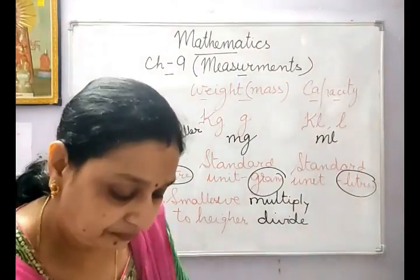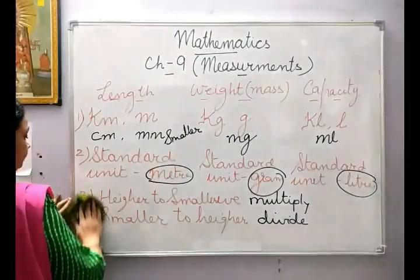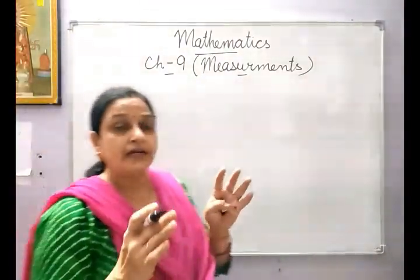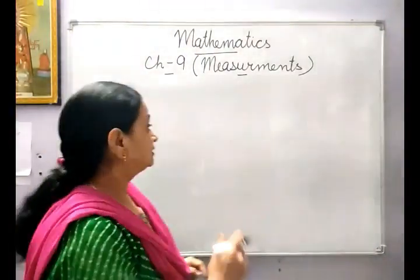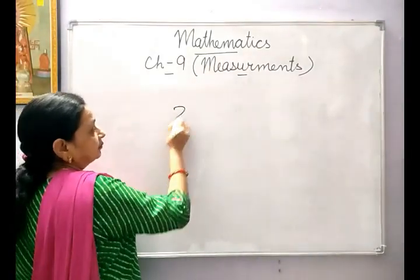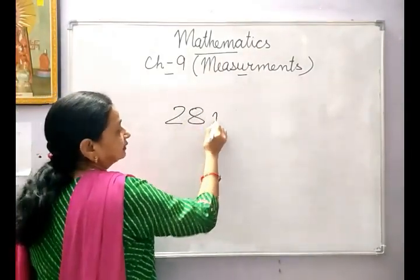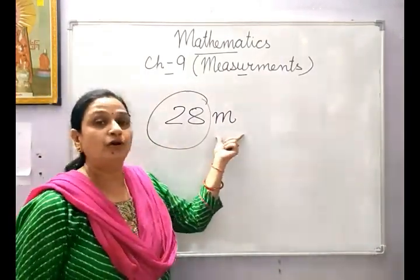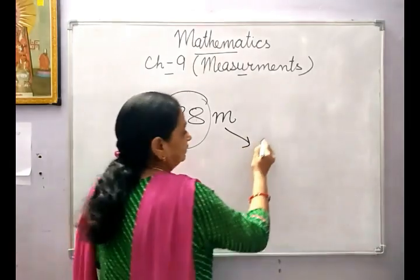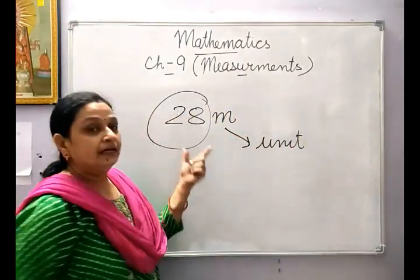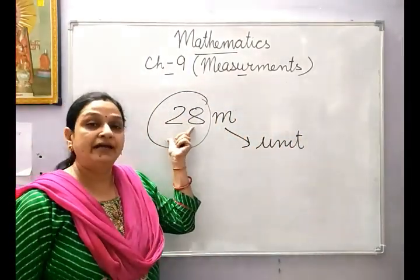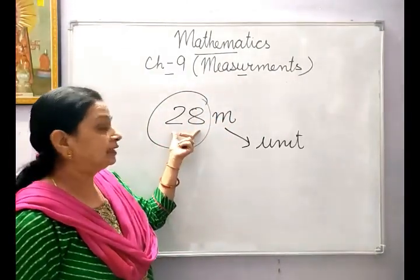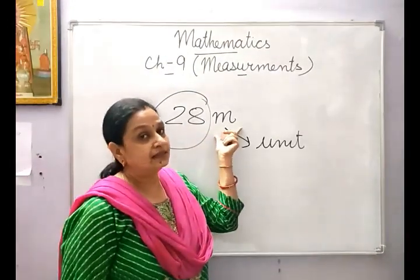One more thing I would like to make clear: for writing the measurement there are two very important things — one is the number and the other is the unit. Whatever the number, it should be followed by a unit. Without this unit, this number doesn't have any value in measurements. So measurement contains two parts: one is the number and the other is the unit.